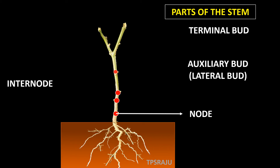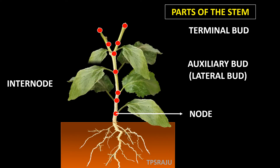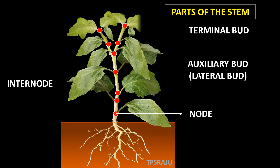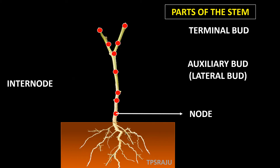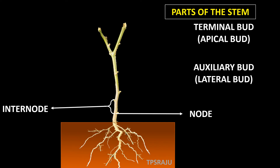These are nodes. Nodes are the part of the stem where the leaves, branches and flowers are raised. The part of the stem between 2 successive nodes is called internodes. The buds at the axil of the stem are called axillary buds. These are also called lateral buds.